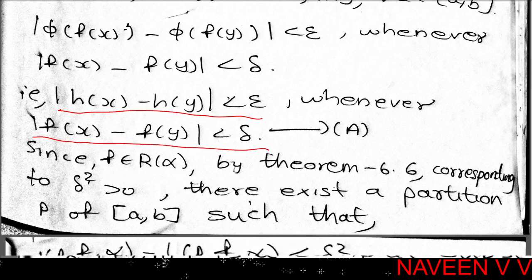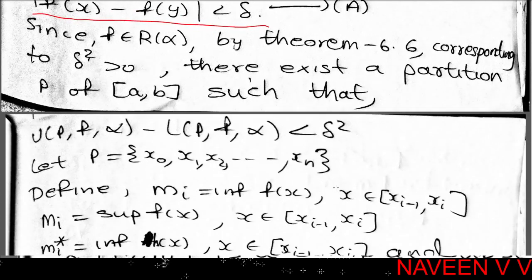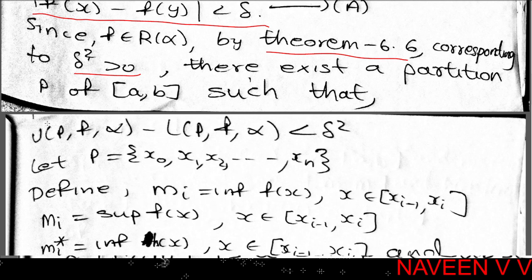Since f is Riemann-Stieltjes integrable with respect to α over [a, b], we apply Theorem 6.6: corresponding to δ² > 0, there exists a partition P of [a, b] such that U(P, f, α) − L(P, f, α) < δ².